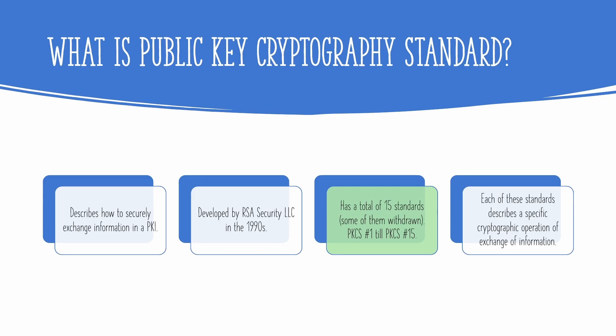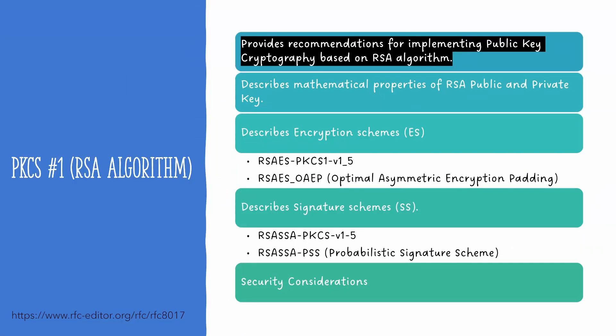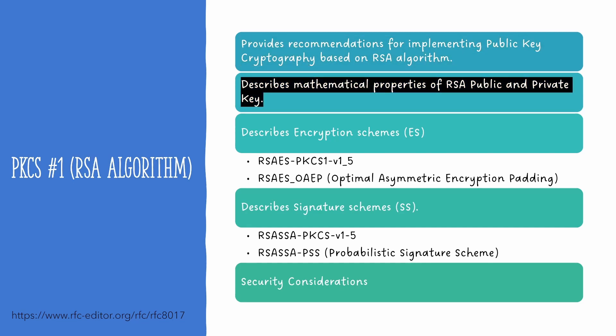All standards described in PKCS talk about a specific cryptographic operation. Some of those operations are based on the RSA algorithm. Starting with PKCS#1 — PKCS#1 describes the RSA algorithm in detail and provides information about how to implement it in the best possible way. PKCS#1 describes the mathematical properties of an RSA public key and a private key, or you could call them a key pair.